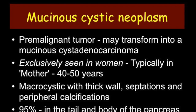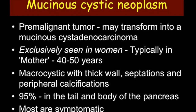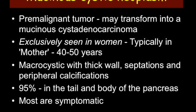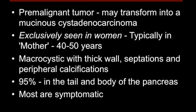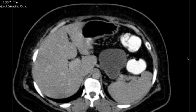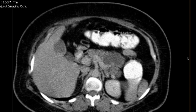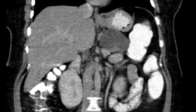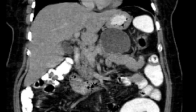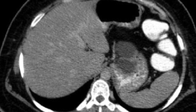Mucinous cystic neoplasms are pre-malignant tumors that may transform into malignancy. They are exclusively seen in middle-aged females, and usually these tumors are macrocystic with thick walls; septations and peripheral calcification can be present. 95% of these tumors occur in the tail and body of the pancreas. On CT scan, they appear as hypodense unilocular or multilocular cysts with possible peripheral calcification and enhancement of the cyst wall and septa. Typically the tumors are more than 2 cm in size with fewer cysts compared to the serous variety.